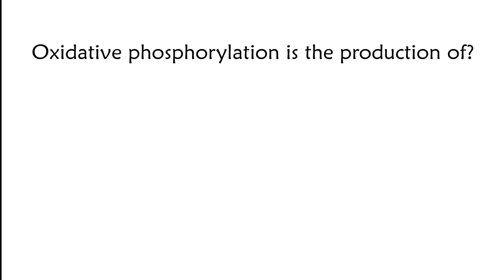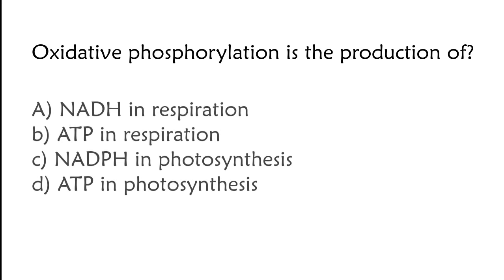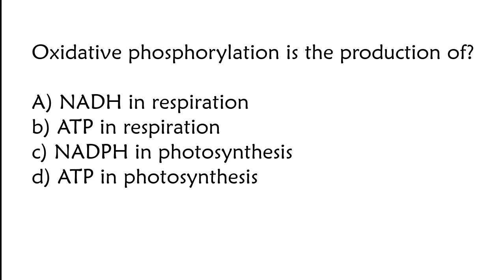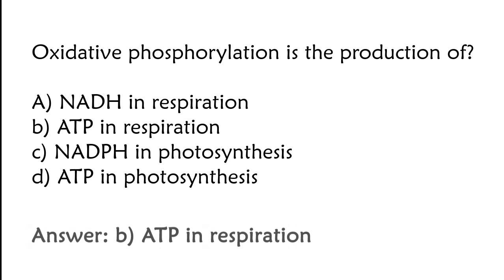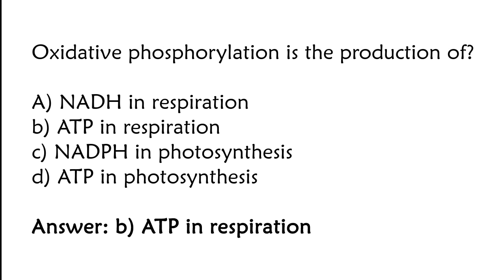Oxidative phosphorylation is the production of: NADH in respiration, ATP in respiration, NADPH in photosynthesis. The correct answer is option B. Oxidative phosphorylation is the production of ATP in respiration.